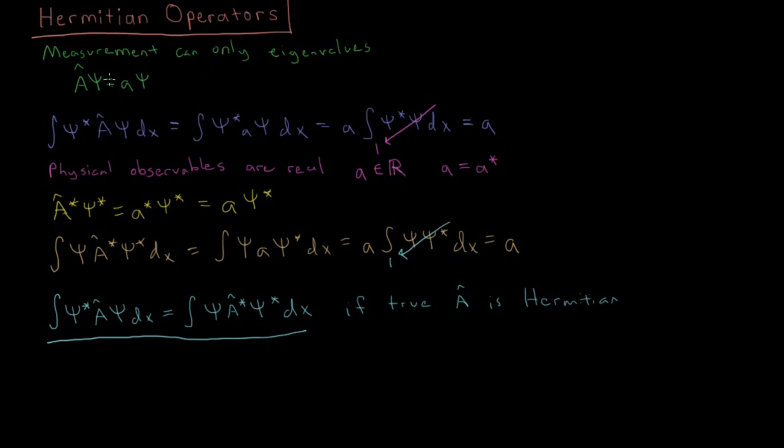Like the average position, average momentum, average energy. Those are all real values. They don't have any imaginary part, they're not complex. So the requirement that these eigenvalues has to be real leads to the requirement that this statement is true. And this is the case if we have a Hermitian operator.